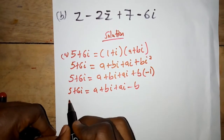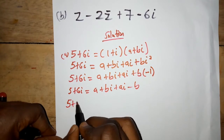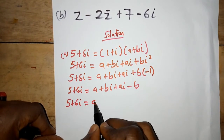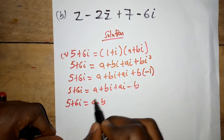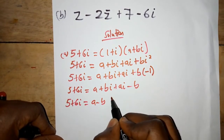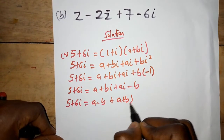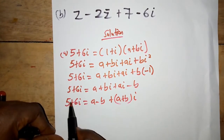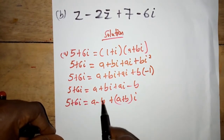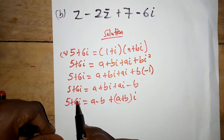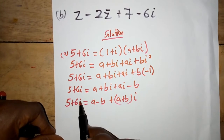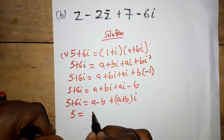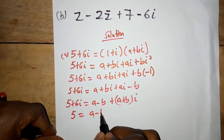Next we group the real part and the imaginary part. Five is the real part and six i is the imaginary part. On the right side, a minus b is the real part and a plus b is the imaginary part. We equate the real parts to each other and the imaginary parts to each other, giving us five equals a minus b.